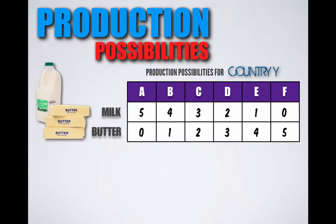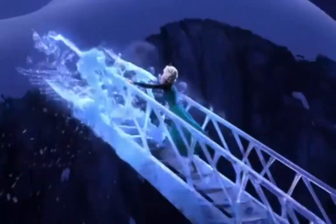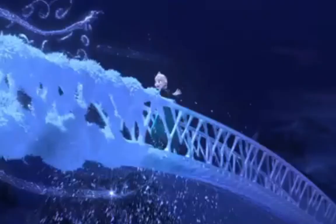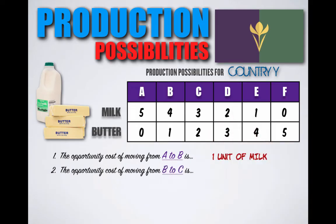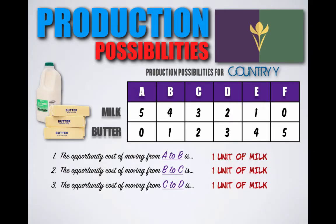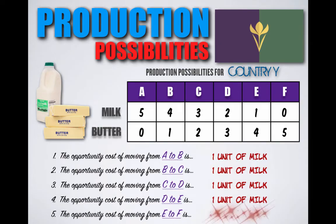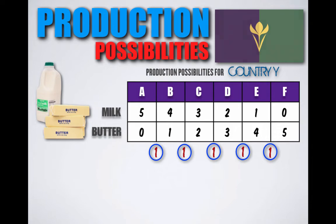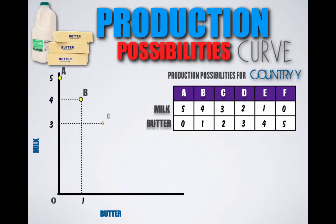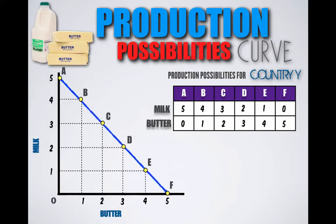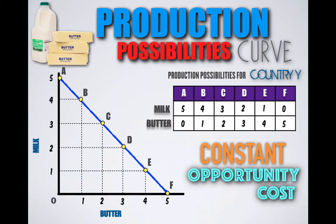Let's do another example. This is the production possibilities for Country Y — it can produce various combinations of milk and butter given its available resources. Let's call Country Y Arendelle. In Arendelle, the opportunity cost of moving from Point A to Point B is one unit of milk, from B to C is one unit of milk, and from C to D is one unit of milk. As it shifts production from combination A towards combination F and back again, the opportunity cost is constant — always one unit at every production possibility. A straight negatively sloped PPC implies that the country is experiencing constant opportunity costs when it produces.